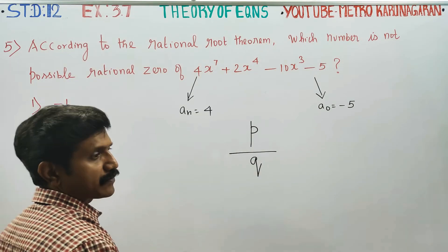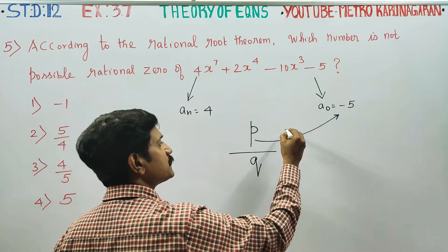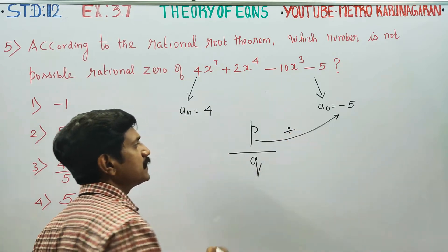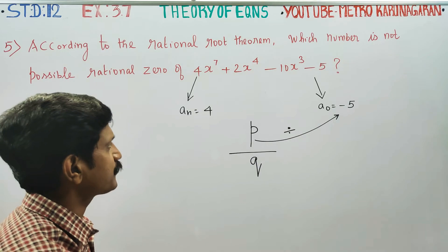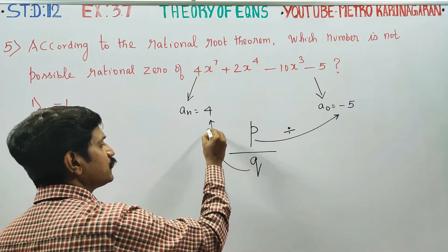p must divide minus 5, and q must divide 4.